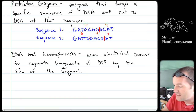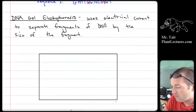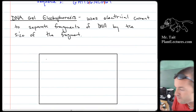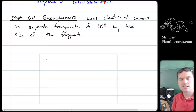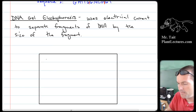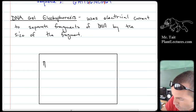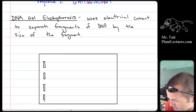The same thing happens in DNA gel electrophoresis. You apply the same amount of energy to all the fragments, but the small fragments move further than the large fragments. You take this stuff called agarose gel — a polymerized agarose gel — and there are little wells at one end where you insert your samples of DNA.